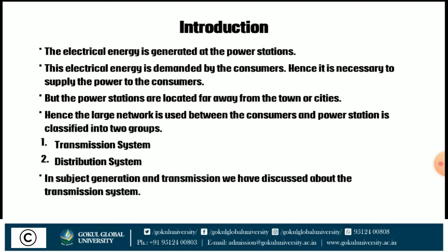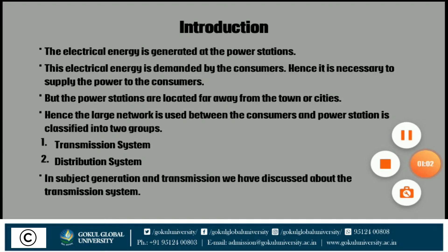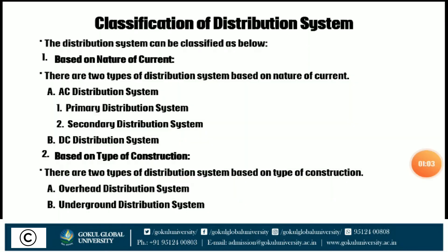This network is classified into two groups: first is the transmission systems, and second is the distribution systems. In this subject, generation and transmission, we have already discussed about transmission systems. Now we discuss about the classification of distribution systems. The distribution system can be classified as below.